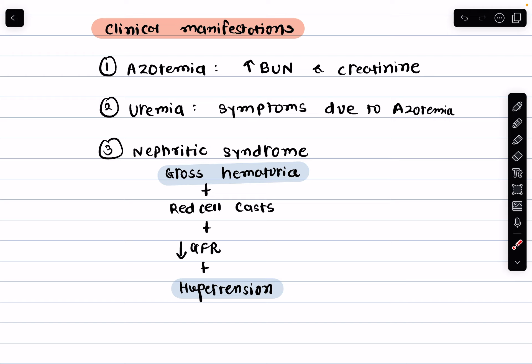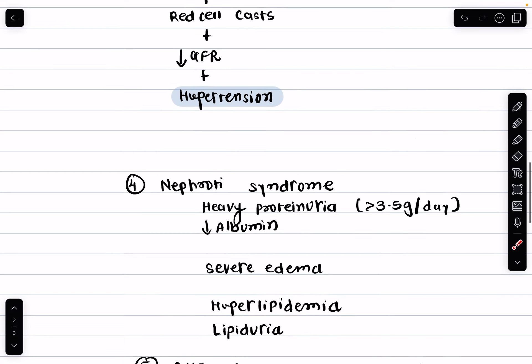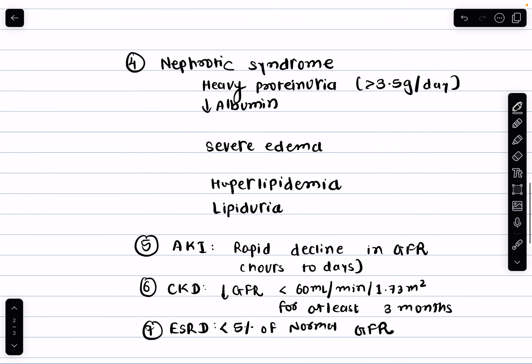The next is nephritic syndrome. Nephritic syndrome includes symptoms such as gross hematuria — visible blood in the urine — red cell casts, reduced glomerular filtration rate, and hypertension.